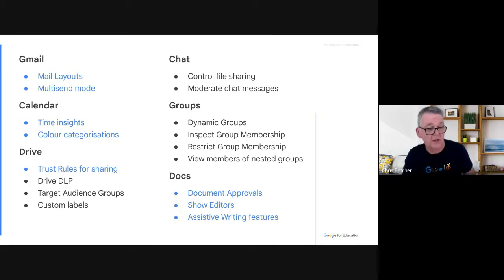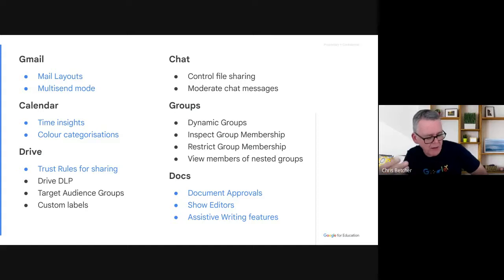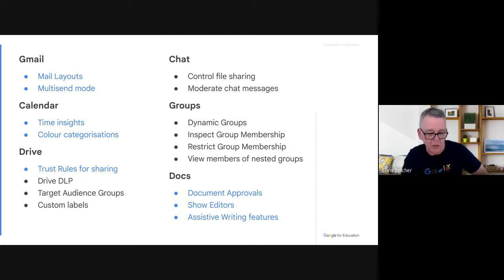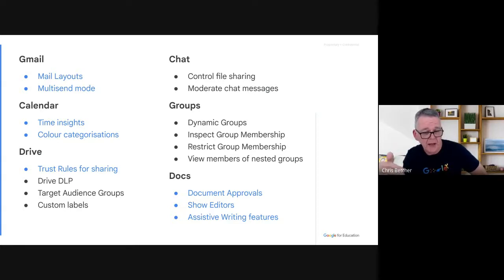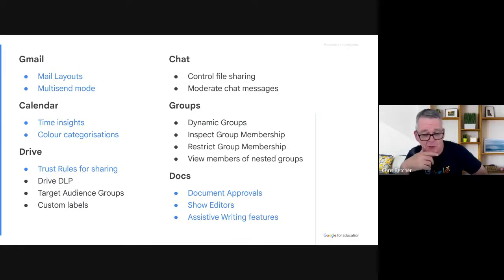Target Audience Groups is a similar concept. When you share a document you can usually share it to specific people, anyone in your domain, or anyone in the world. With Target Audience Groups you can specify specific groups — for example, create a group called 'Teachers' with all your school's teachers — and use that as a target group. I worked in a school where a student and teacher had the same name and the student kept getting emails meant for the teacher. Target Audience Groups would fix that problem by clearly indicating who was in what group.